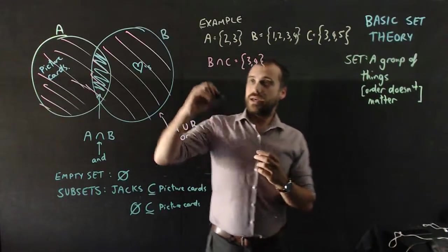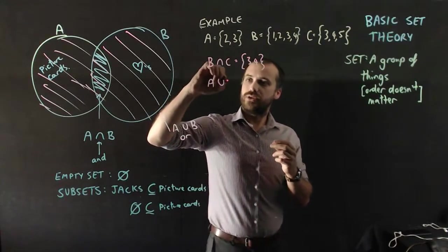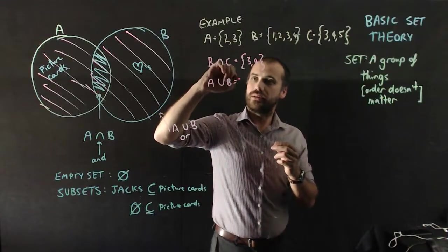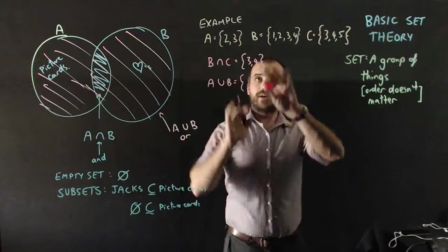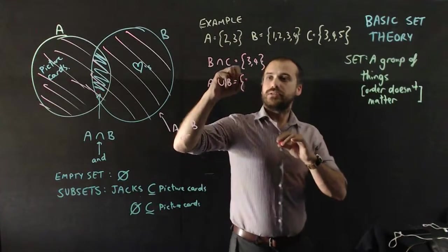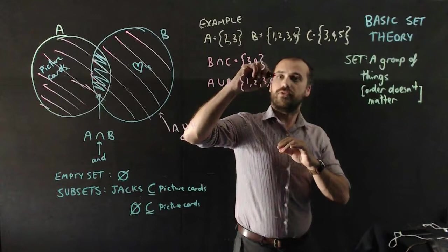We could say A union B. That's all of the elements from A and all of the elements in B. So, 1, 2, 3, 4.